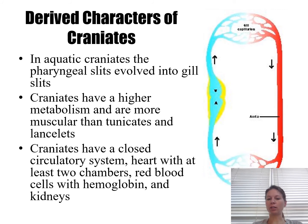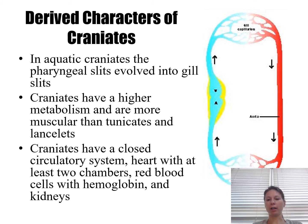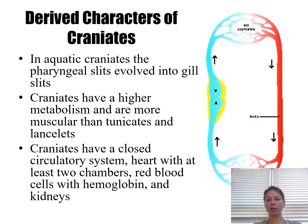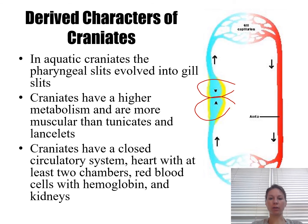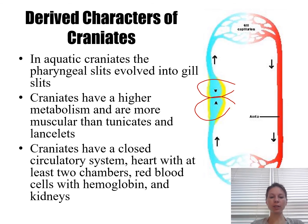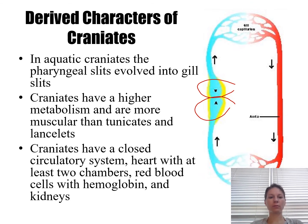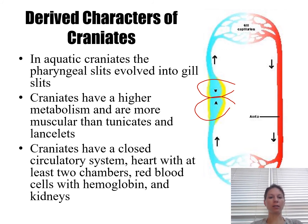Craniates have gills instead of filter feeding structures, are more muscular, and have a higher metabolism than lancelets and tunicates. They have a closed circulatory system with at least two chambers in the heart — one atrium and one ventricle — hemoglobin to carry oxygen in the blood, and kidneys that help regulate and clean their blood and control the amount of water in their body.